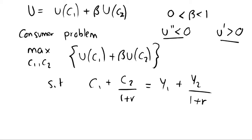How do we solve this maximization problem? We could use the Lagrangian method and take first order conditions, but it's simpler to rearrange the budget constraint and substitute it into our utility function. Then we can take just one first order condition with respect to the one remaining variable. Using our intertemporal budget constraint, we isolate c2 on one side and substitute it into our utility function. We rearrange by multiplying through by one plus r.